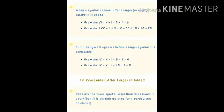Now let us start with the first rule. When a symbol appears after a larger number, then it means that the number is added to the given number. For example, if I add 5 plus 1, I will represent it V plus I. That is 6. So this is how the rule of addition works.